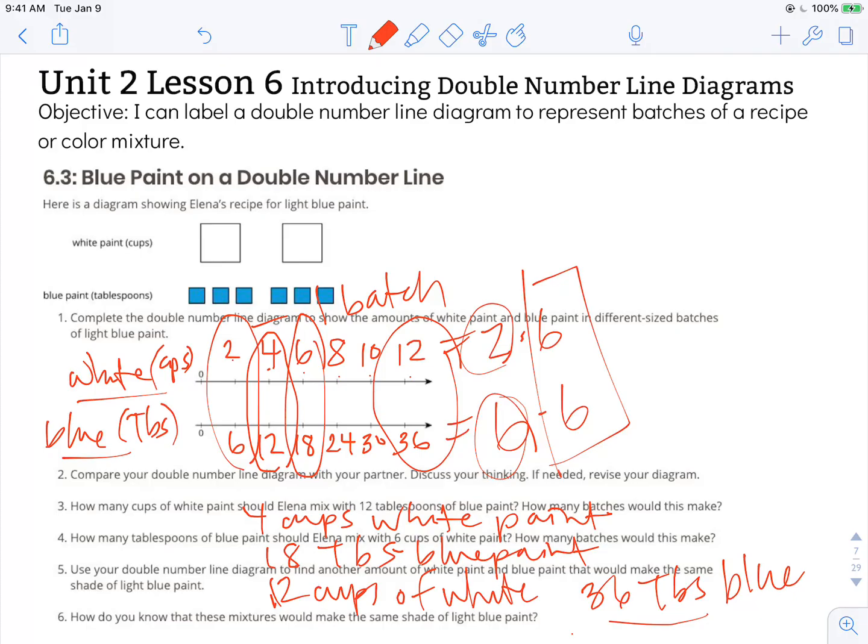Again our objective states I can label a double number line diagram to represent batches of a recipe or color mixture.